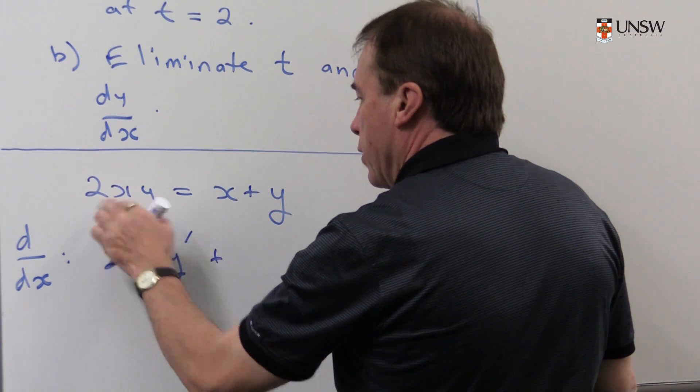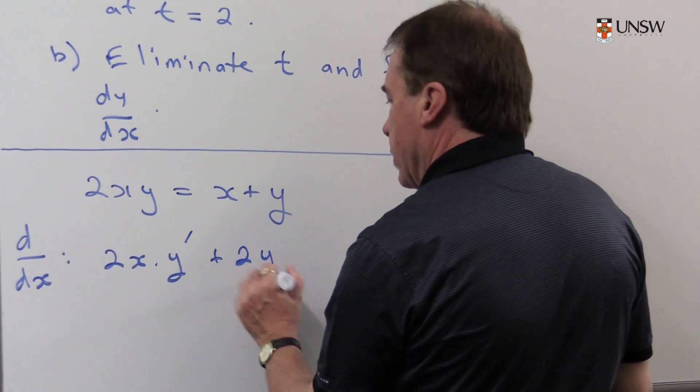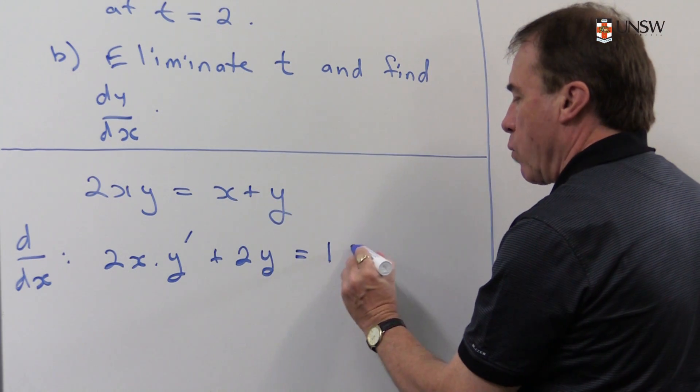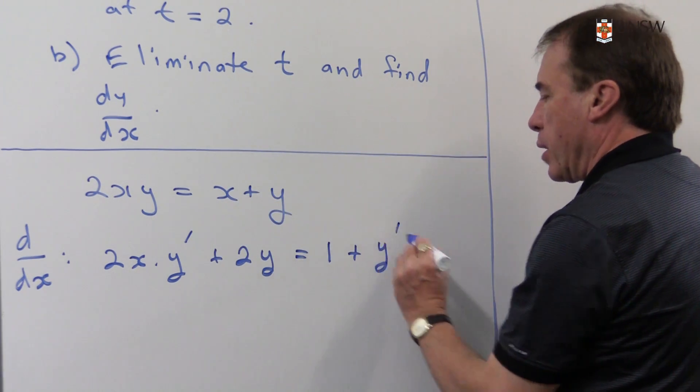And copy the second, so I get y. On the other side, I differentiate x, I get 1. Differentiate y, you get y'. So to finish it off then, I'm just going to take all the terms with y' on one side.